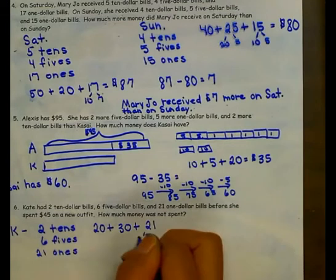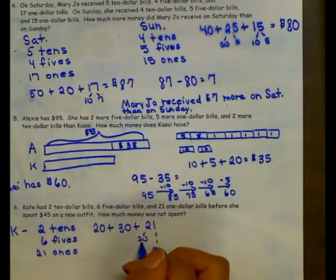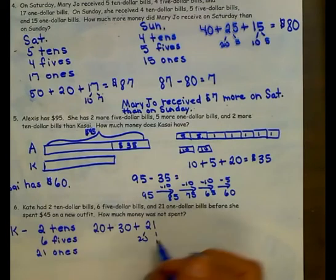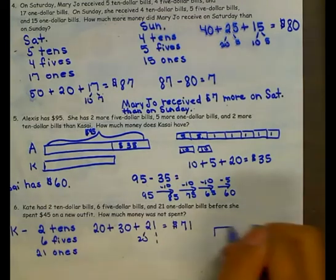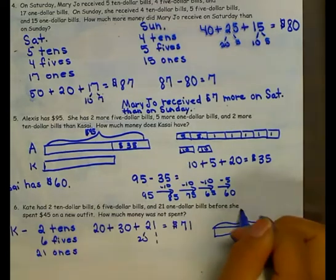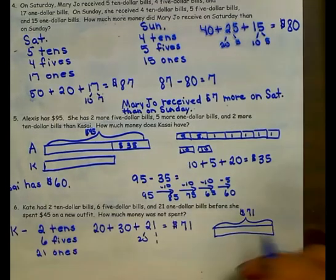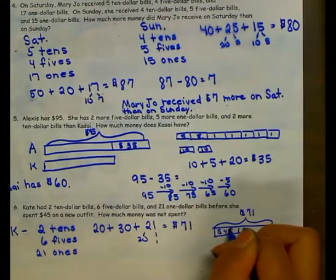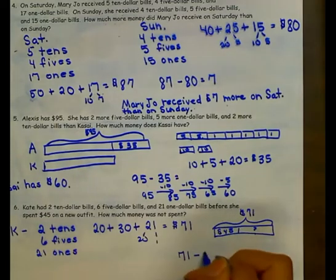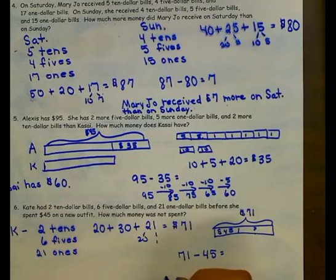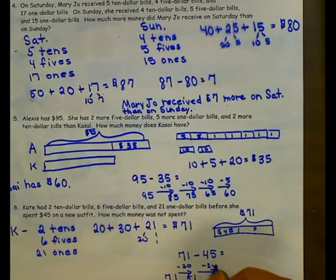20 plus 30 gives me $50, plus 20 more gives me $70, plus 1 more is $71. Now I know she has a total of $71. But she spent $45 on an outfit, so I need to figure out how much she has not spent. $71 minus $45: $71 minus $20 gives me $51, minus $20 more gives me $31, minus $5 more gives me $26. So Kate has not spent $26.